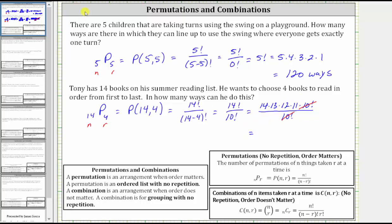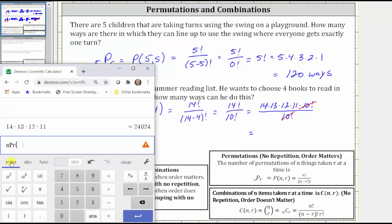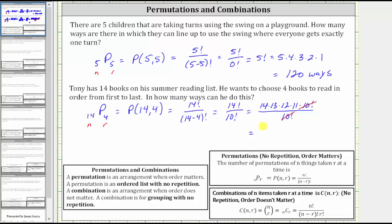Let's verify on the calculator. 14 × 13 × 12 × 11 equals 24,024. We can also verify that 14 permute 4 gives the same result by going to functions, clicking NPR, entering 14 comma 4, and we get the same result: 24,024 ways Tony can pick his books.